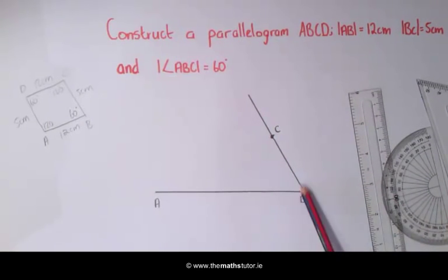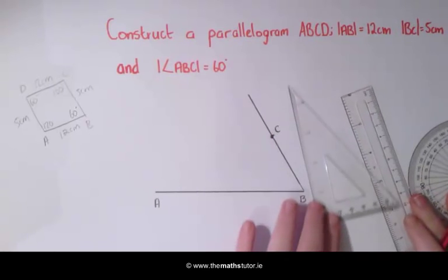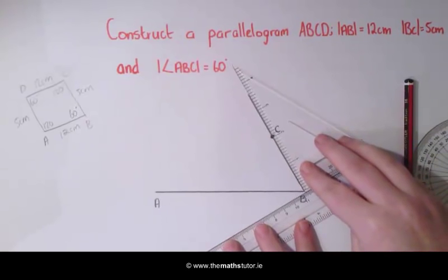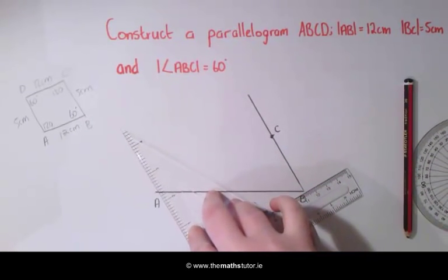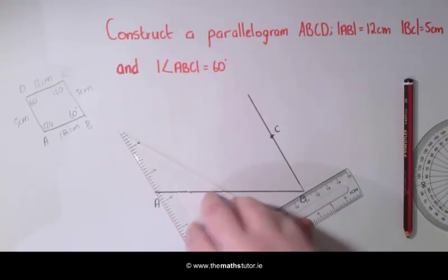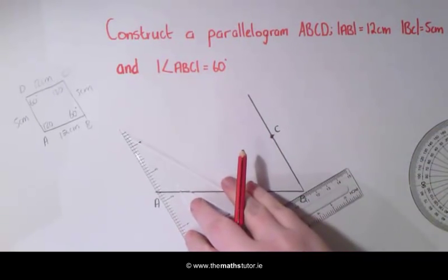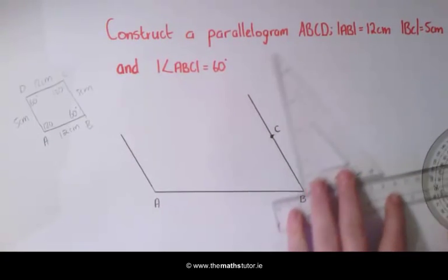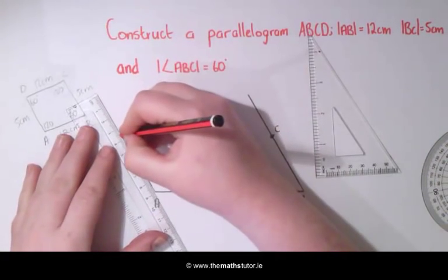We are then going to draw a parallel line using our set square. We are going to line it up and using our ruler as a guide we are going to slide along until we come to A and extend it out.